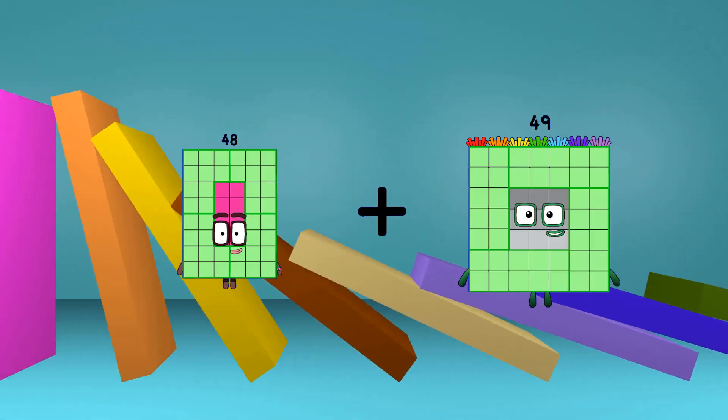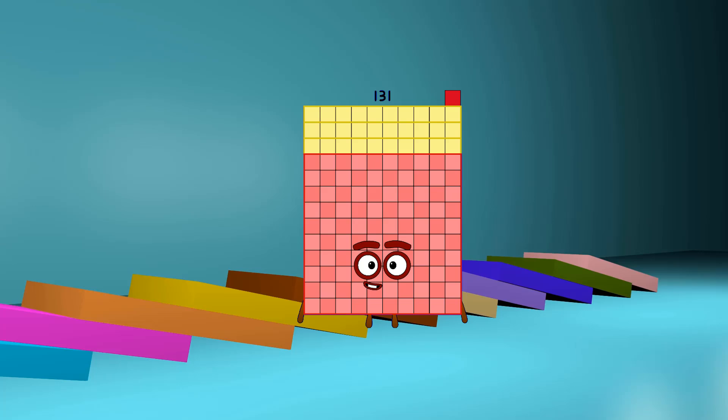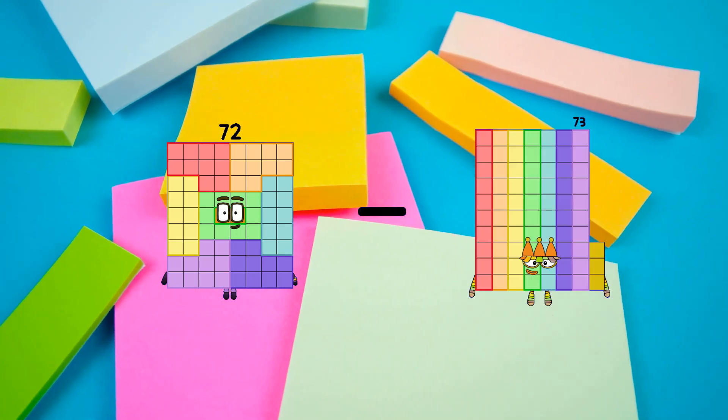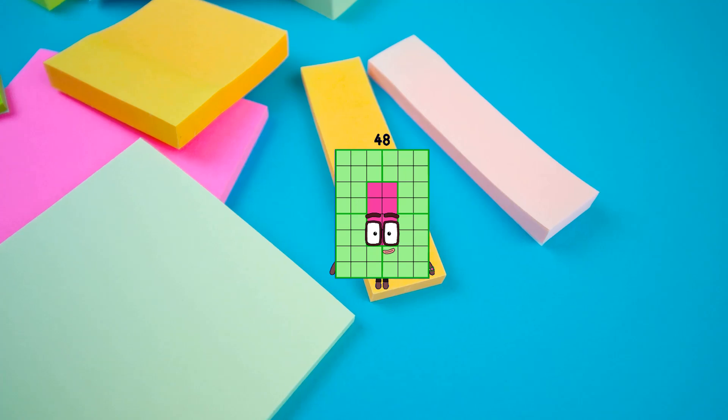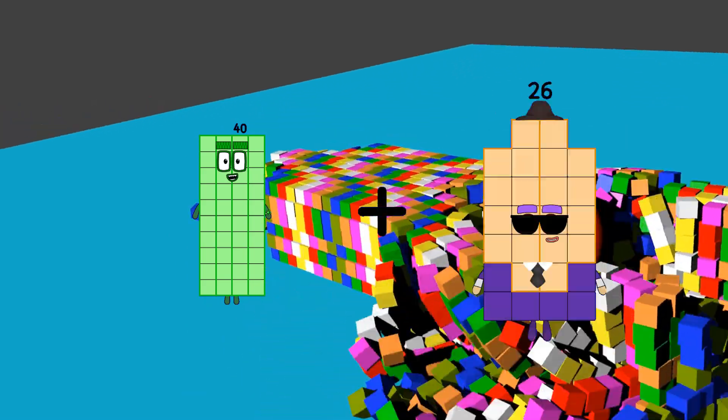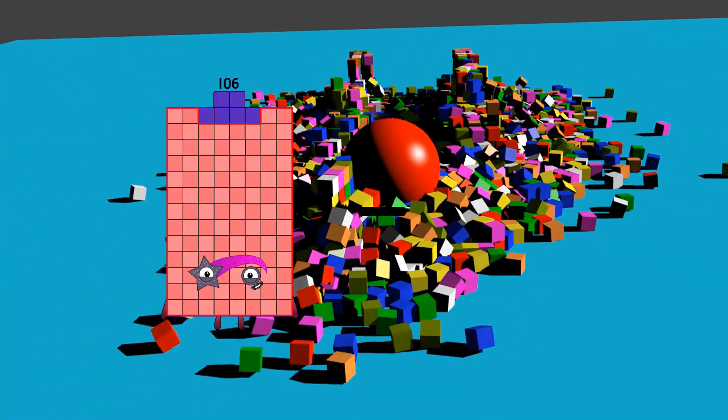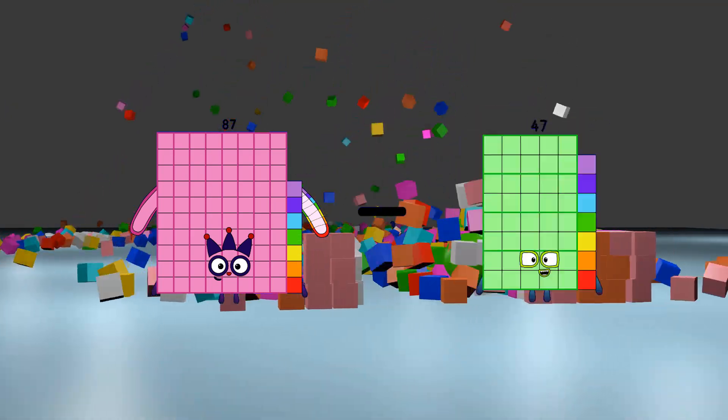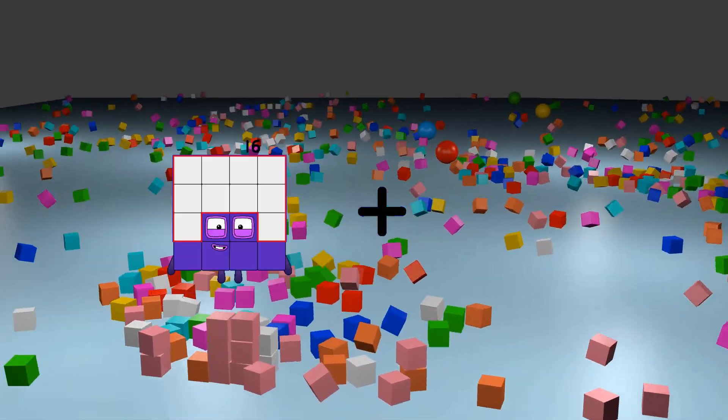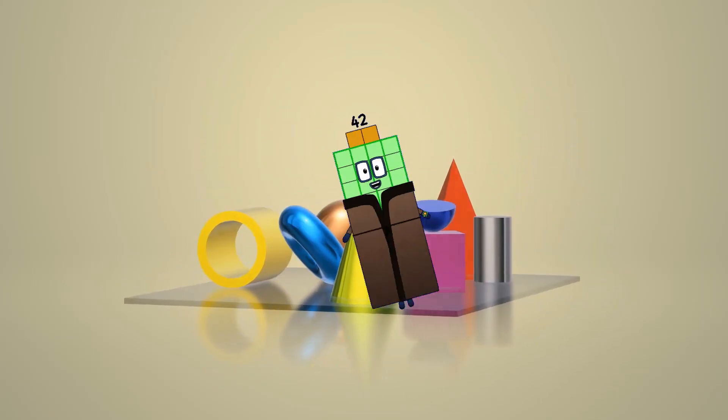48 plus 83 equals 131. 72 minus 24 equals 48. 40 plus 87 equals 131. 87 minus 63 equals 24. 24 plus 18 equals 42.